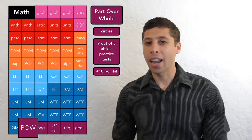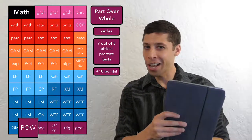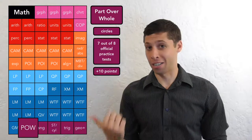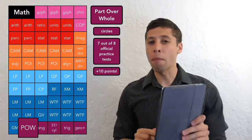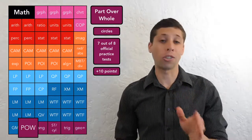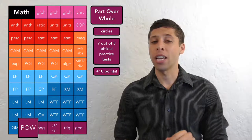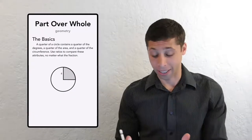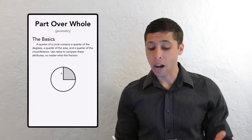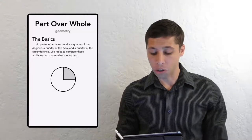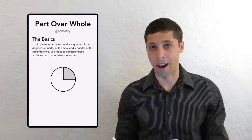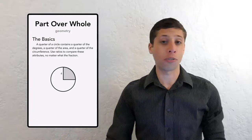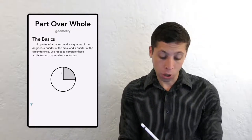Let's take a look at the basics. I'm going to use the iPad a lot, partly because it makes it easier to show my work, and also so that you know when I'm looking here, you should be looking here. I'll put all the examples and questions up on the screen, but remember you can download all of them for free from my website. A quarter of a circle contains a quarter of the degrees, a quarter of the area, and a quarter of the circumference. Use ratios to compare these attributes no matter what the fraction.